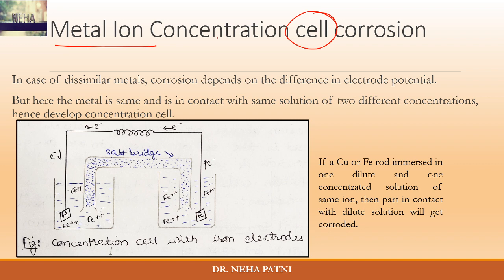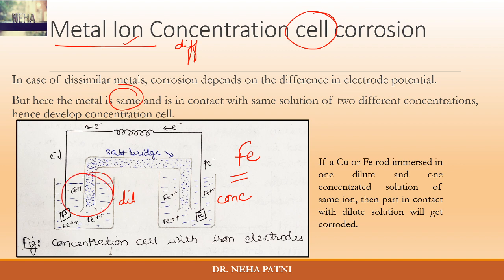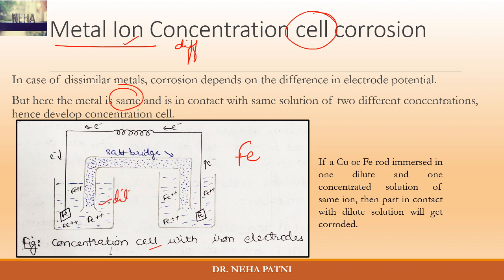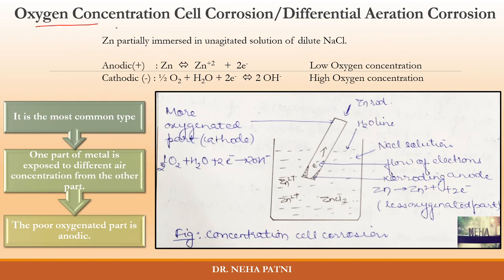Let's start with metal ion concentration cell corrosion. A cell develops due to difference in metal ion concentration, with the same metal throughout. For example, take an iron rod immersed in two different solutions — one dilute and one concentrated solution of the same metal ion, say iron sulfate or iron chloride. The same metal develops a concentration cell, and the area in contact with the dilute solution gets corroded because there is less metal ion concentration.